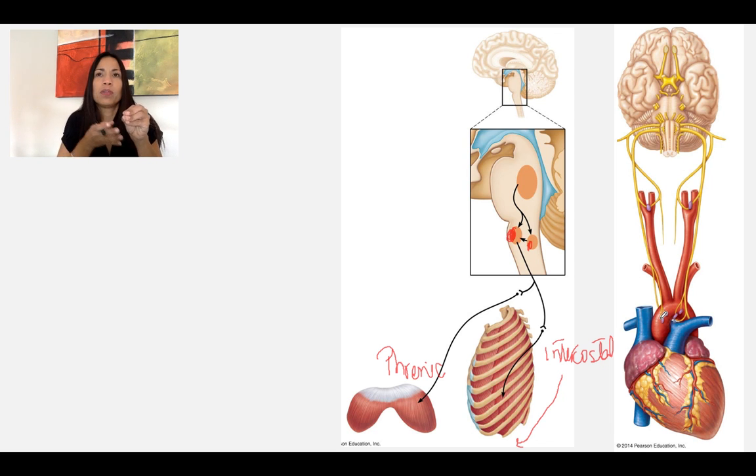These chemoreceptors, as blood flows through these blood vessels, are monitoring the composition, the chemical composition of blood. If the oxygen concentration in blood drops, or carbon dioxide concentration in blood increases, or the blood gets too acidic, that sensory information will be sent through visceral sensory fibers to the medulla oblongata.